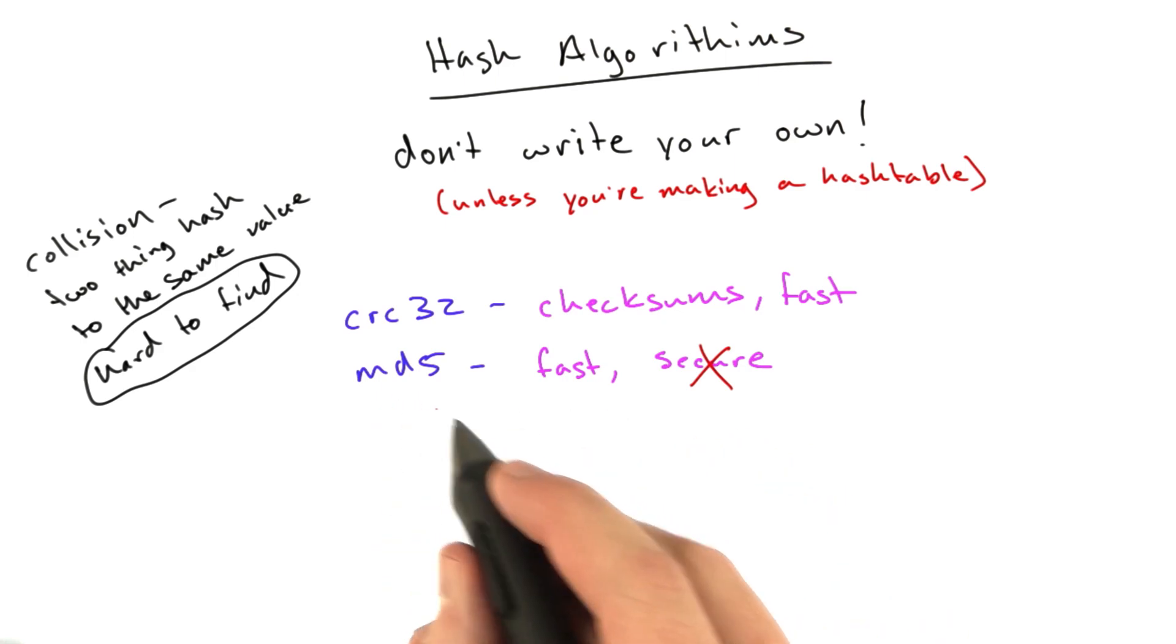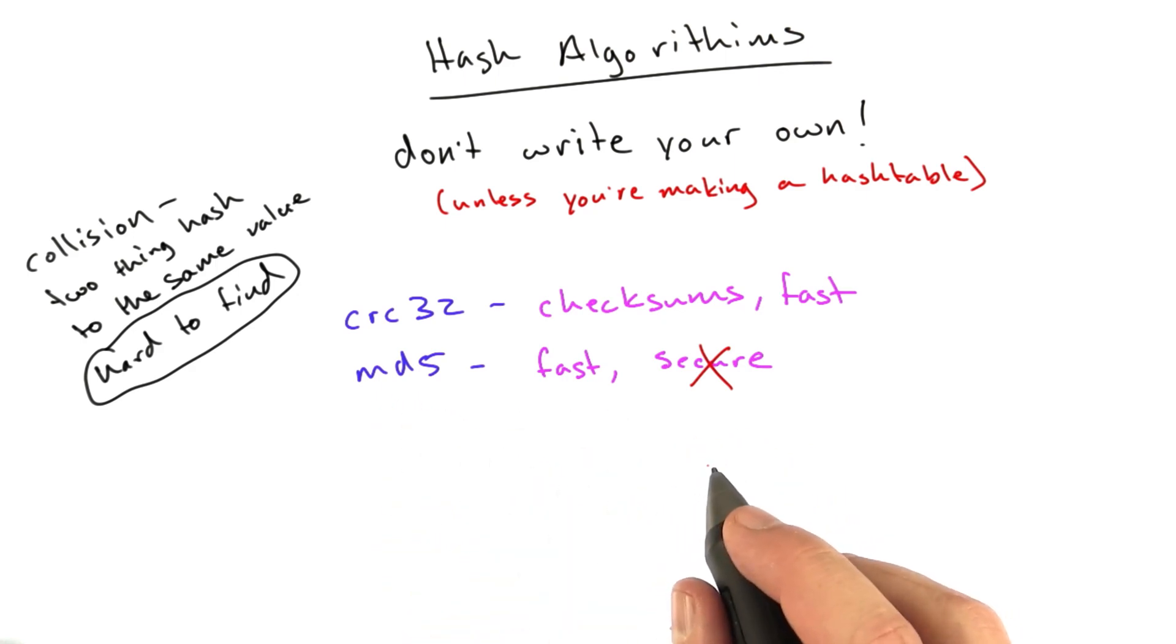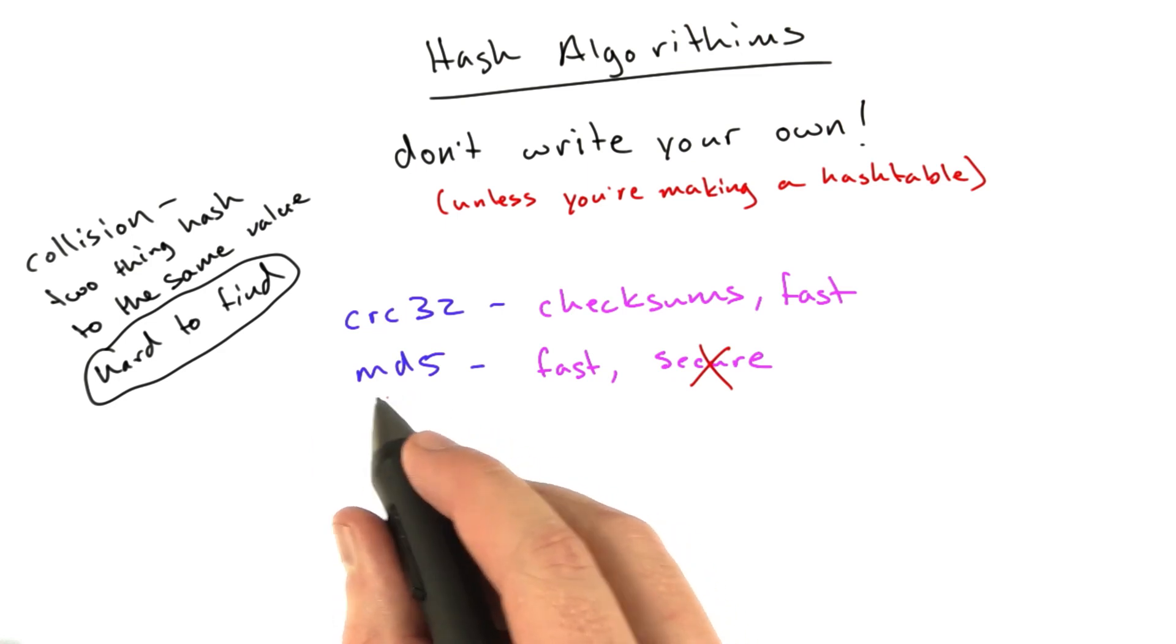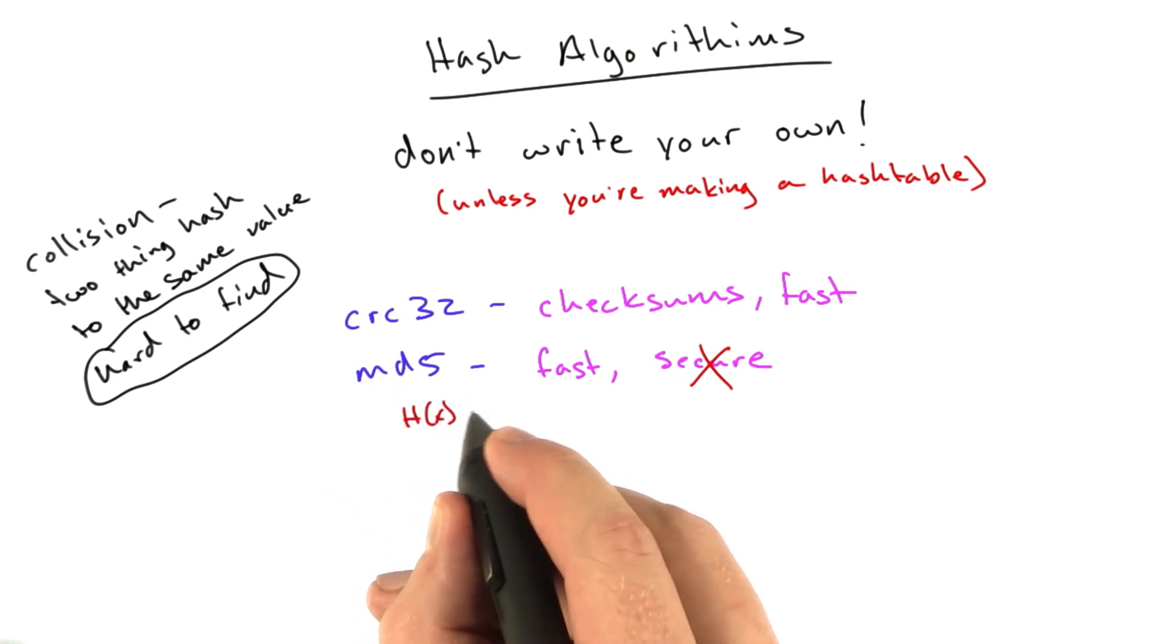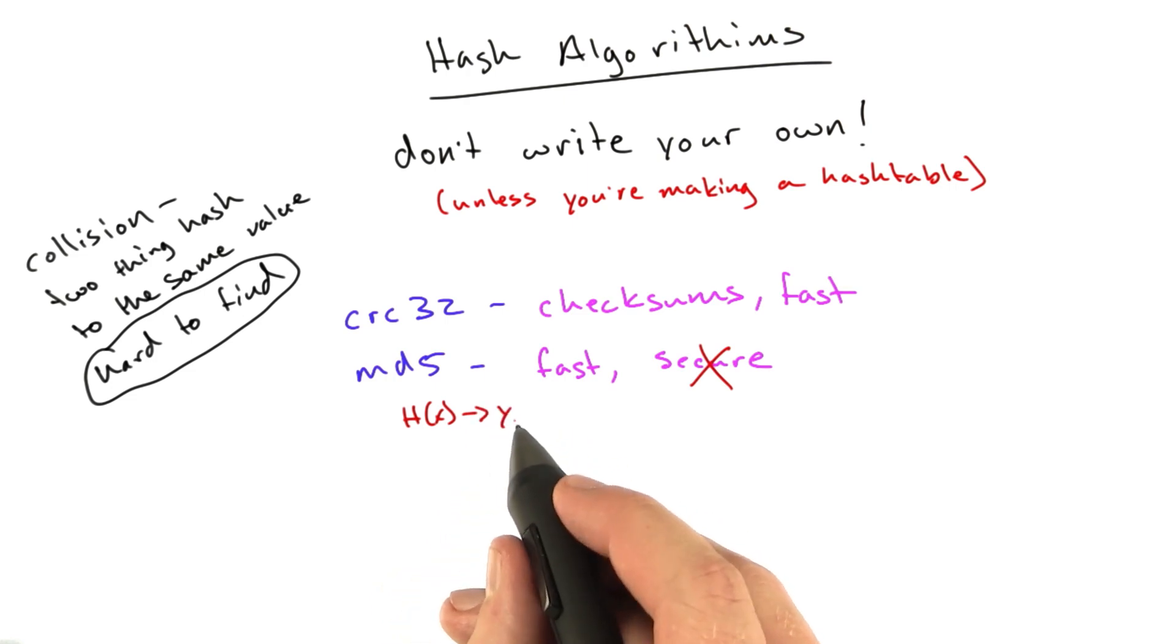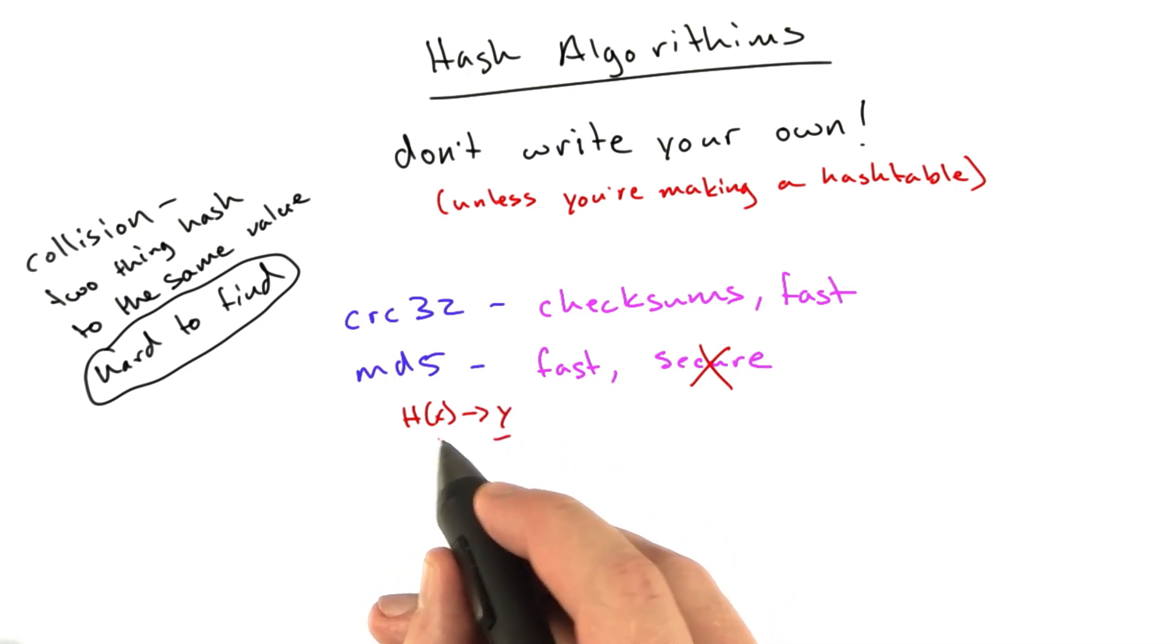MD5 has been broken repeatedly over the last few years, and it's very easy to find MD5 collisions. Given an X that hashes into a Y, it's very easy, given this Y, to find another X that hashes into it, which is, as you'll see, a big problem.